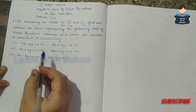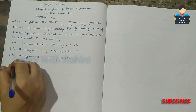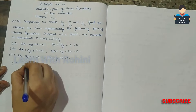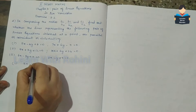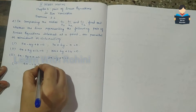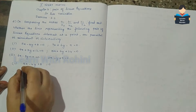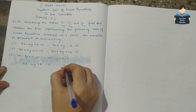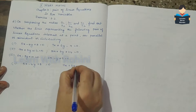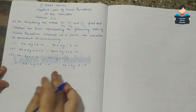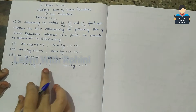First subdivision: the equations are 5x minus 4y plus 8 equal to 0, and 7x plus 6y minus 9 equal to 0.